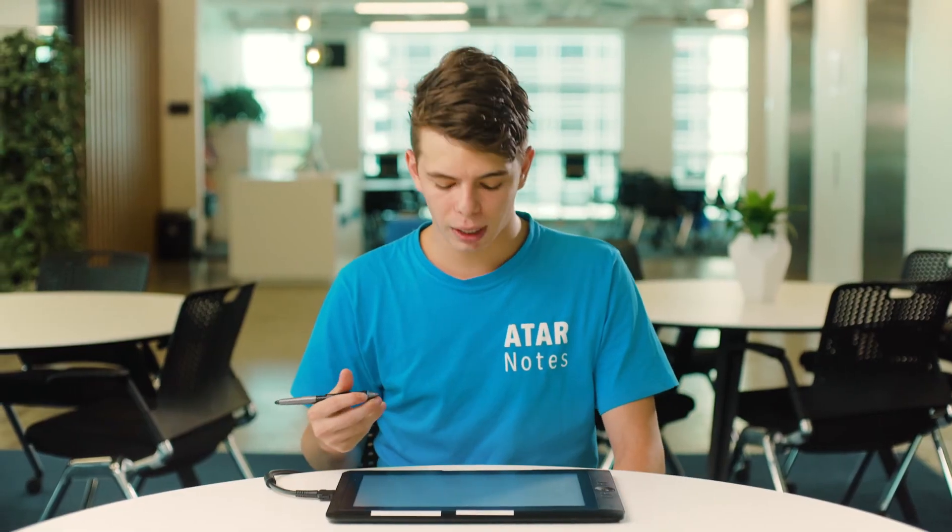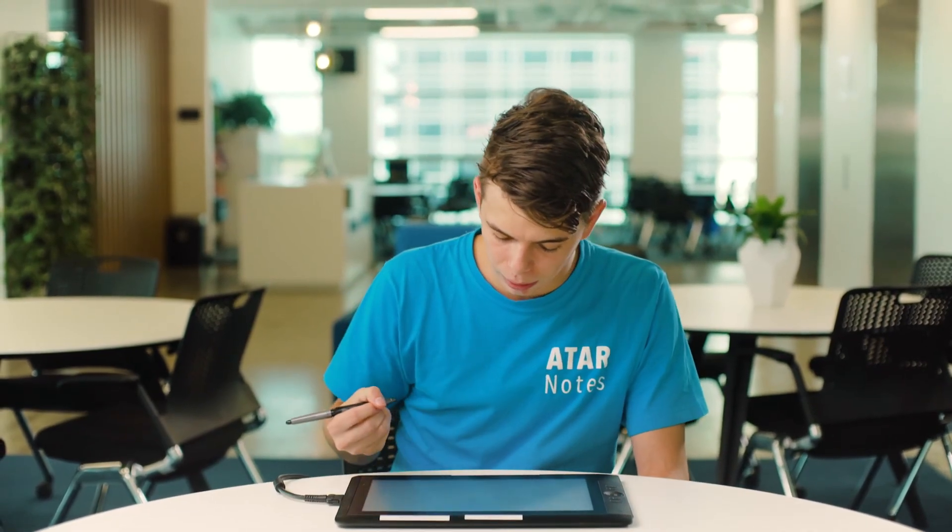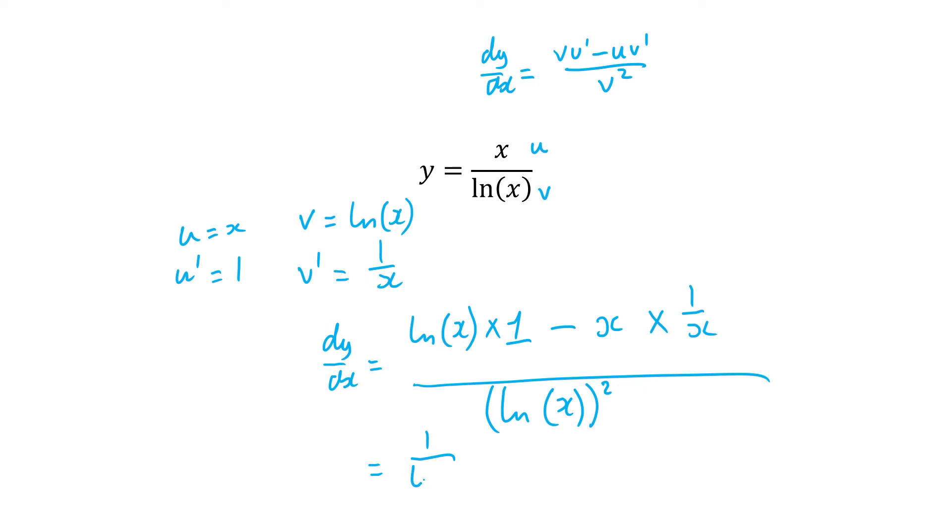Now we can simplify this and we'll get something that looks like this. So we end up getting 1 over the natural logarithm of x minus 1 over the natural logarithm of x squared.